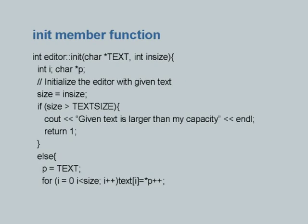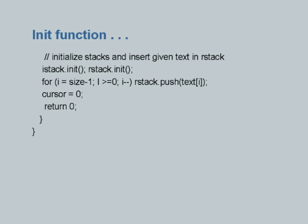This is of course the initialization — we are all familiar with this. I just push the text into an internal array and then initialize these two stacks, and push all my characters onto the right stack. Whatever is the size, from size-1 to 0, because I have to push the characters — the last character should be the first one to be pushed in, because that is the order in which the characters should appear on the stack.